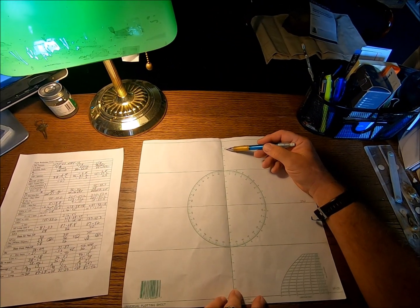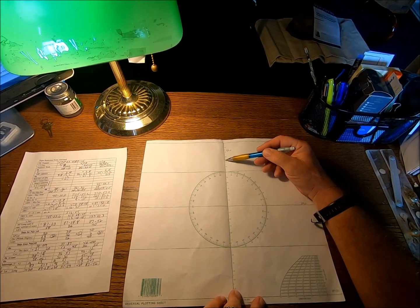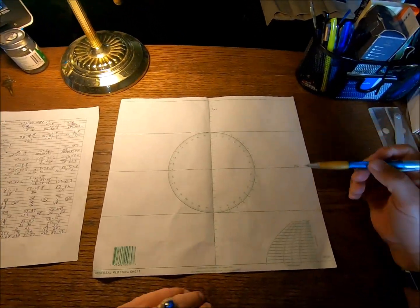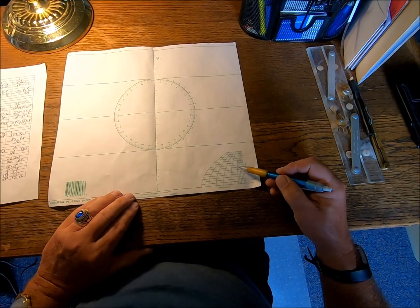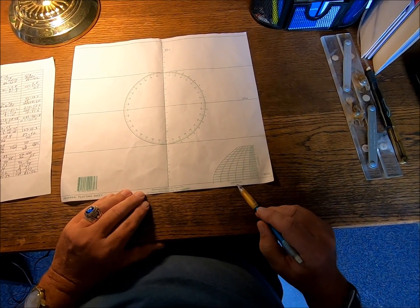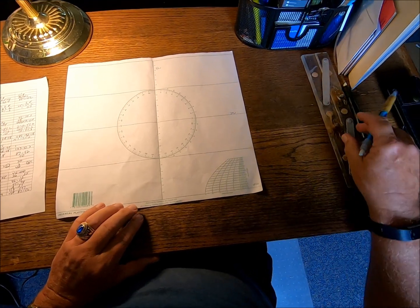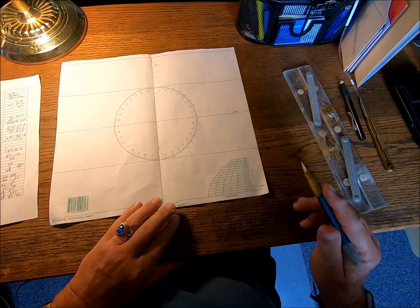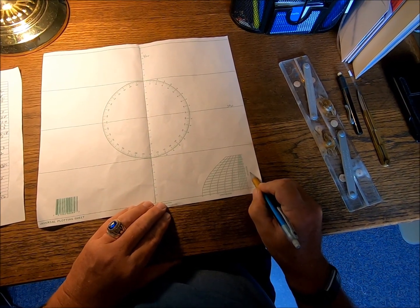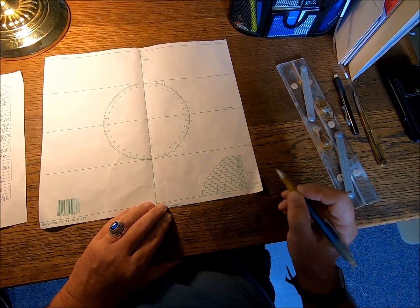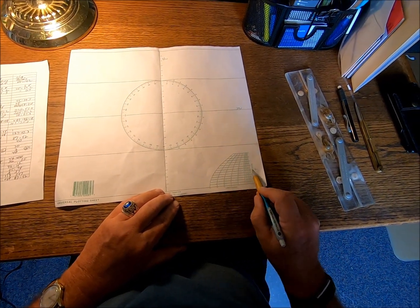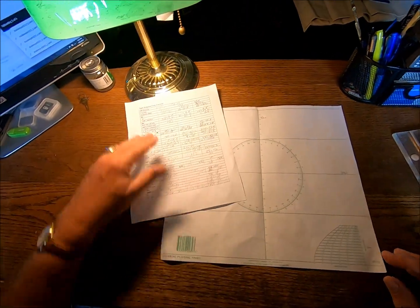The longitude lines vary between each one because they converge at the poles. So, we have to use this plotting aid down in the lower right, the longitude scale, based upon where we are as far as latitude. We're at 30 degrees, so I'm going to put a little arrow here. We're at 30 degrees north, so we'll measure all longitudes right there.